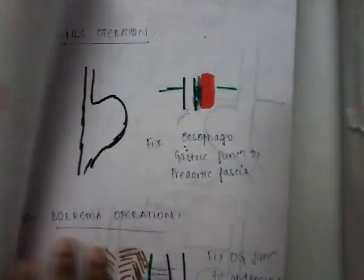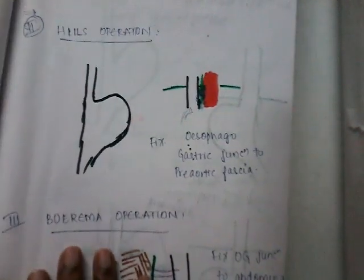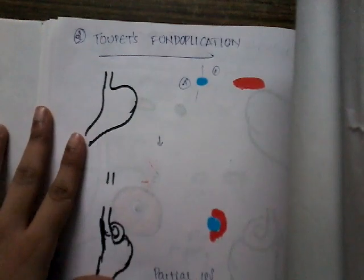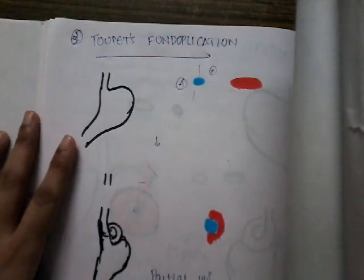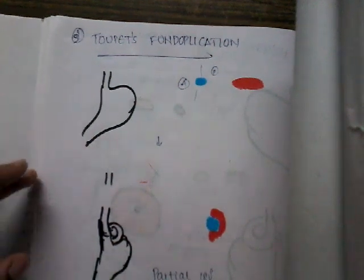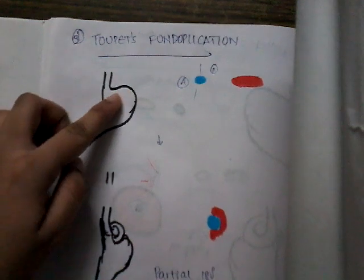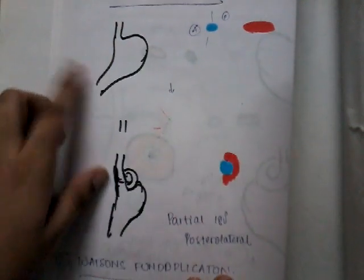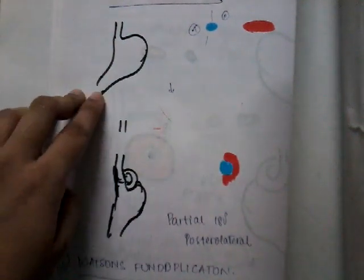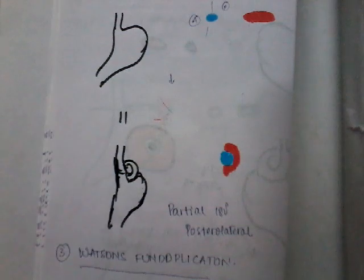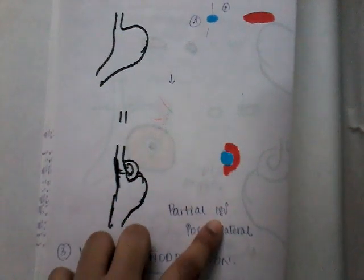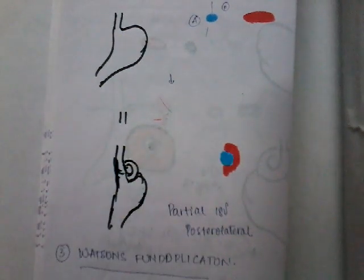The next surgery is Toupet fundoplication. Here the fundus is mobilized and wrapped around the esophagus, but the wrapping is only 180 degrees and it is to the posterior side — so there is posterior wrapping of the fundus around the esophagus. That is Toupet fundoplication.